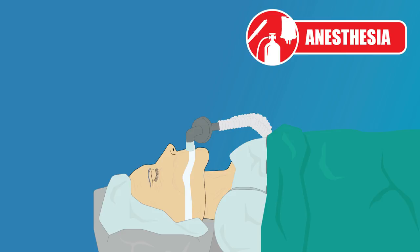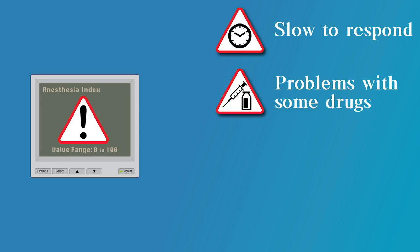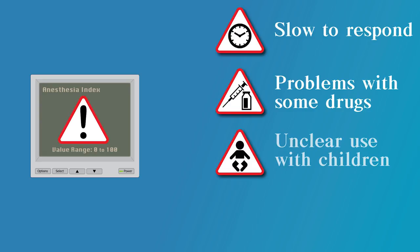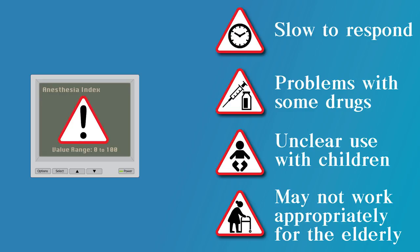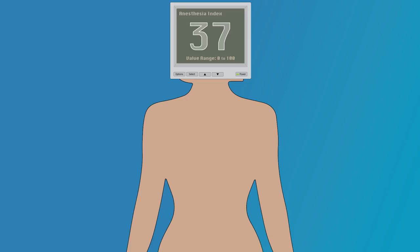Recognized issues with the indices include: they are often slow to respond to changes in the patient's state; some drugs, such as ketamine, nitrous oxide, and dexmedetomidine, seem to give the indices problems; it is unclear if we can reliably use them in pediatric populations; and the indices may not work appropriately in elderly patients. One of the main reasons the indices had so many problems was that they were constructed at a time when we did not clearly understand the science of what was occurring in the brain during anesthesia.